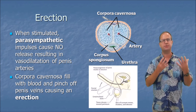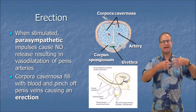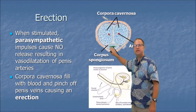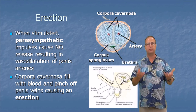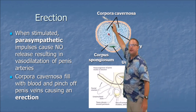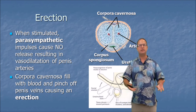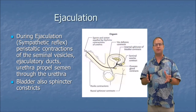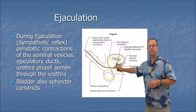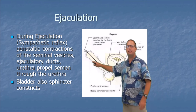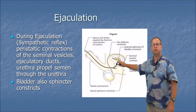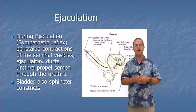For erection, parasympathetic nerve impulses — requiring the male to be relaxed and aroused — cause release of nitric oxide, a potent vasodilator. This enlarges blood vessels in the penis, allowing blood to enter the erectile tissue. The corpora cavernosa fill with blood and pinch off the dorsal penile vein, maintaining the erection. In contrast, ejaculation is caused by a sympathetic reflex: spinal nerves signal peristaltic contractions in the seminal vesicles, sending seminal fluid through the urethra and out of the penis — two to five milliliters containing millions of sperm. The bladder sphincter also constricts to prevent urination during ejaculation.